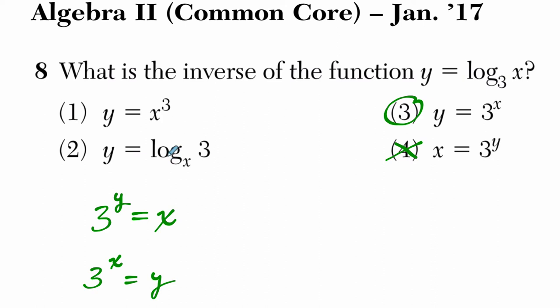Notice here, though, choice 2 is kind of interesting. They've swapped around a couple of things. This says x to the exponent of y would equal 3. So we move things around, certainly in this equation. You move the x and the 3, but that is not the inverse. That's something else.